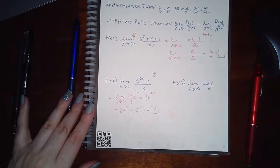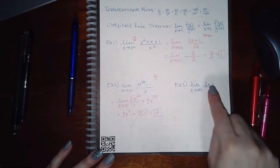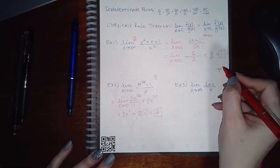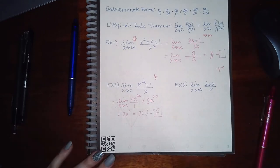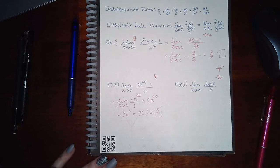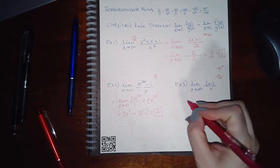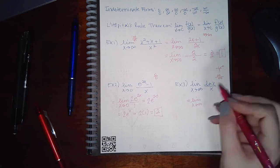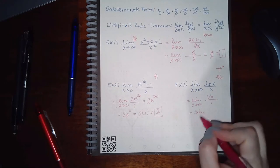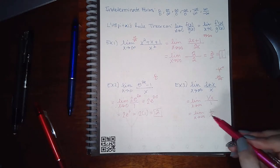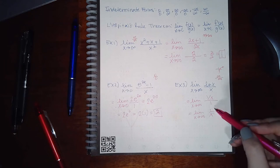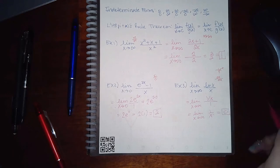The next problem involves ln(x)/x as x goes to infinity. Plugging in infinity: ln(x) does go to infinity — the graph increases forever, just slowly. The denominator also goes to infinity, giving the indeterminate form infinity over infinity. Applying L'Hopital's Rule: the derivative of ln(x) is 1/x, and the derivative of x is 1. So we're taking the limit of 1/x as x goes to infinity. As the denominator grows increasingly large, the fraction approaches 0. The limit is 0.